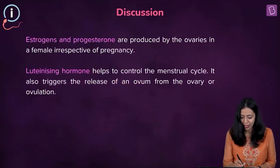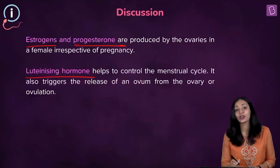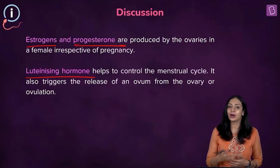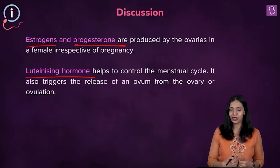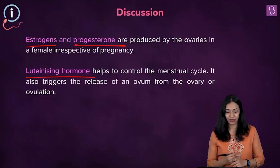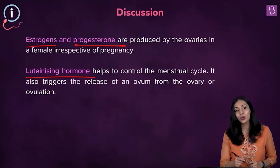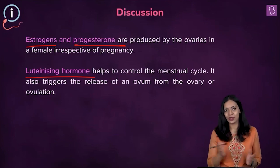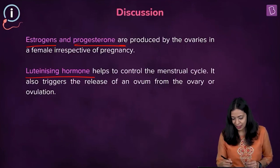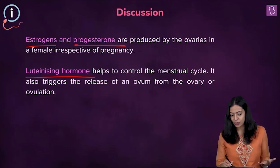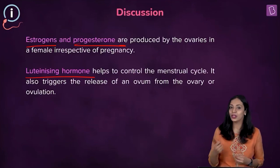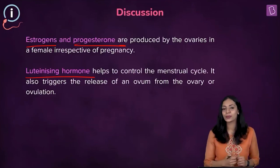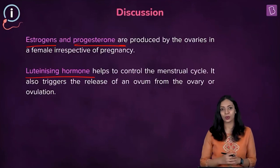In the other options, estrogens and progesterone are found in females even when they are not pregnant, so they do not indicate pregnancy. Luteinizing hormone is also found in women at all times even when not pregnant; its function is to induce ovulation and help maintain the corpus luteum, which produces progesterone.